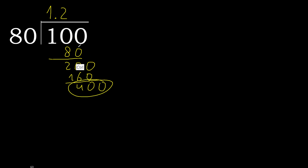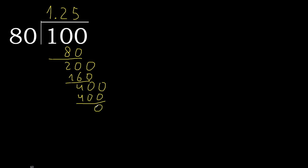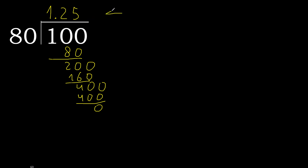400. 80 multiplied by 5 is 400. Subtract 0. Therefore finish — 100 divided by 80 is 1.25.